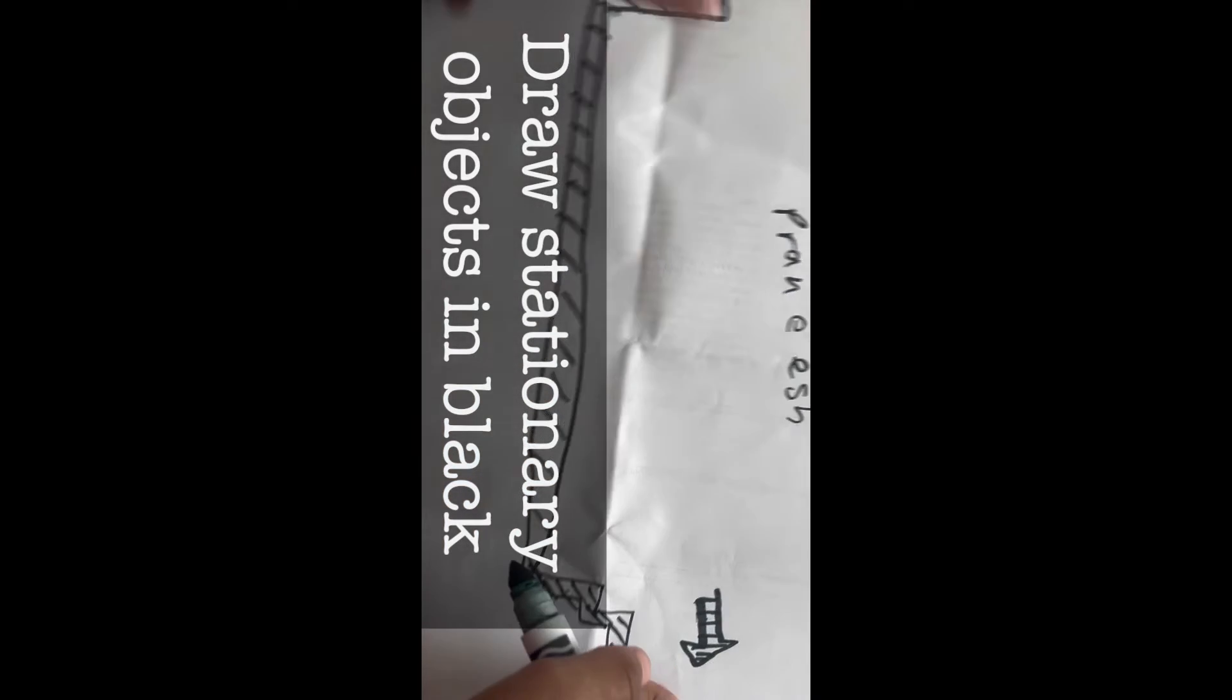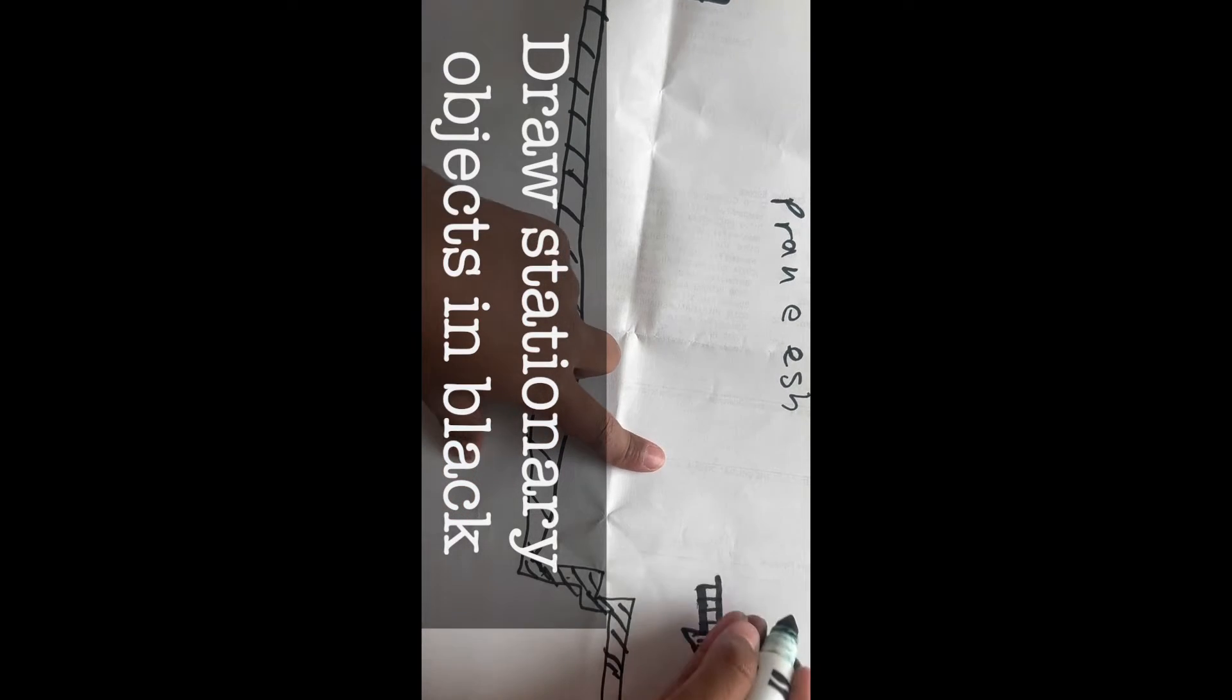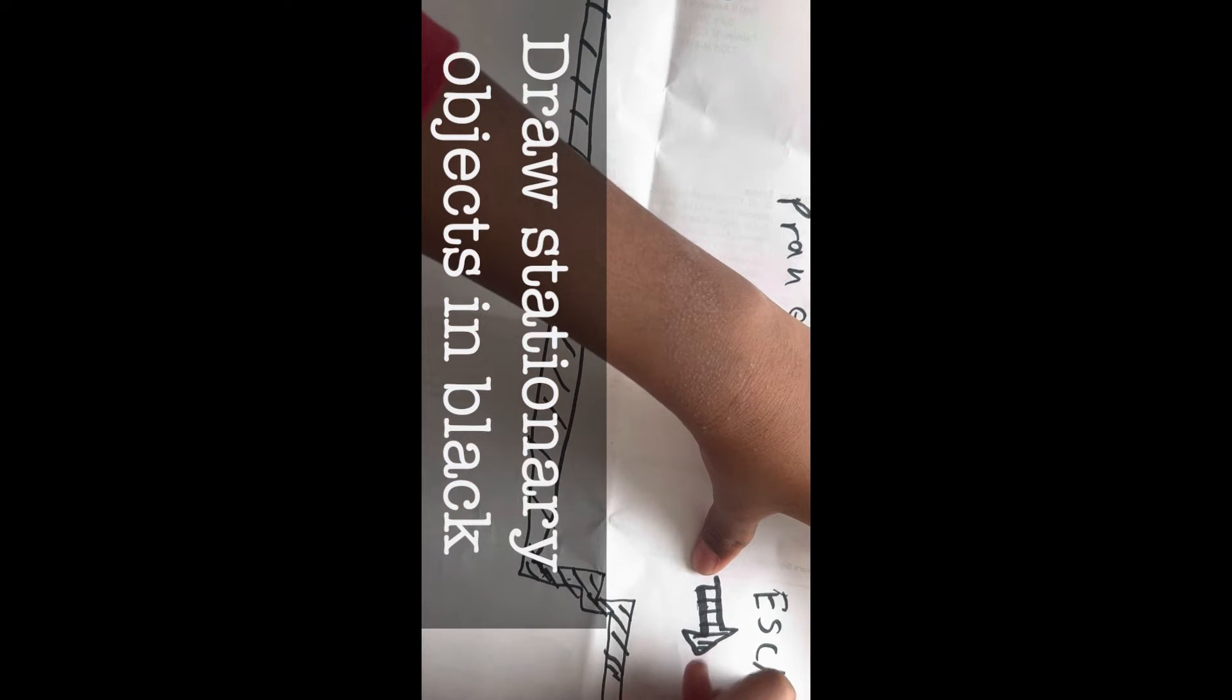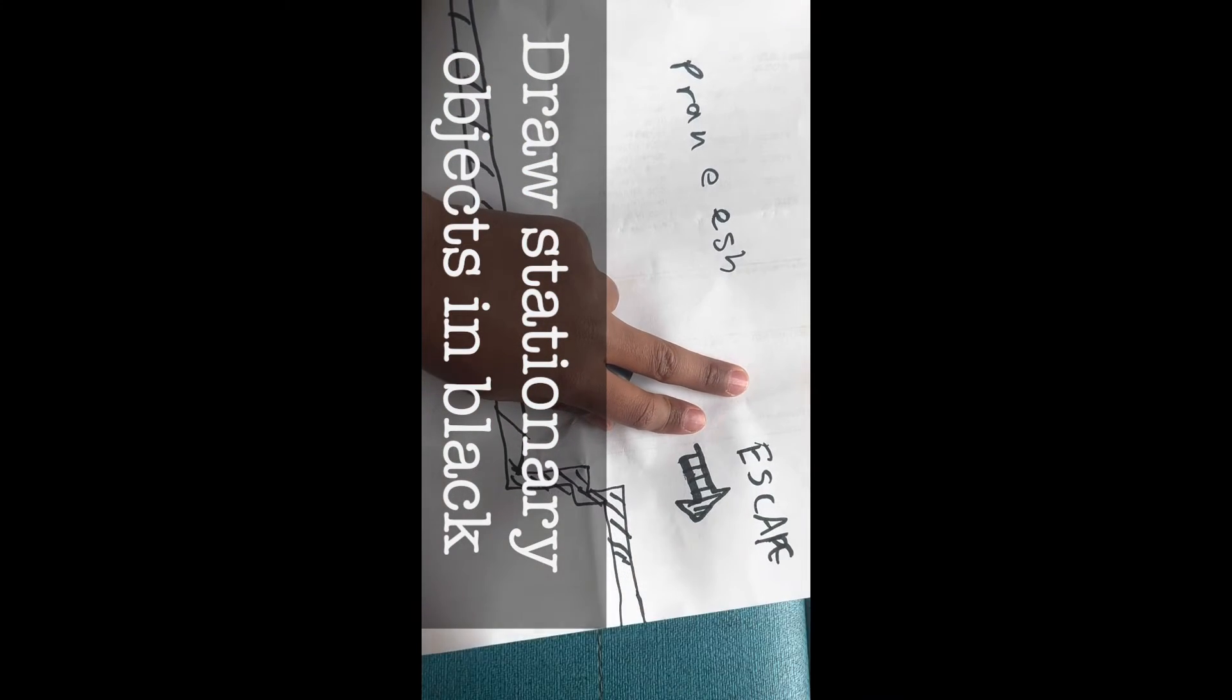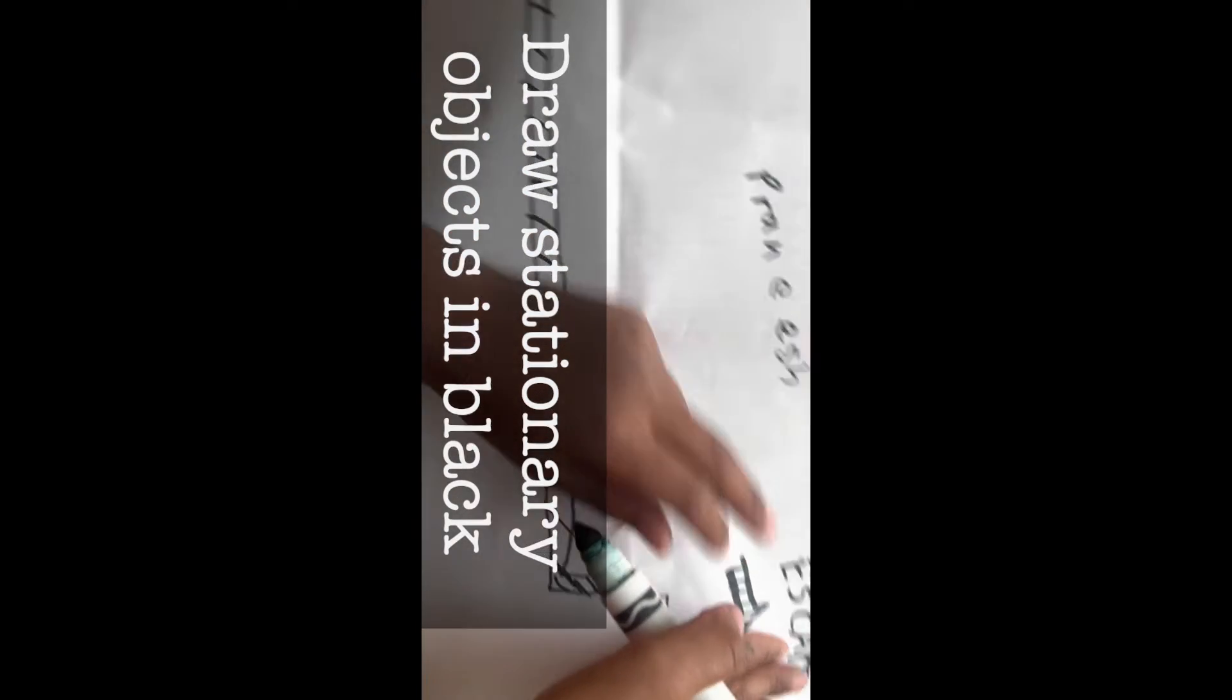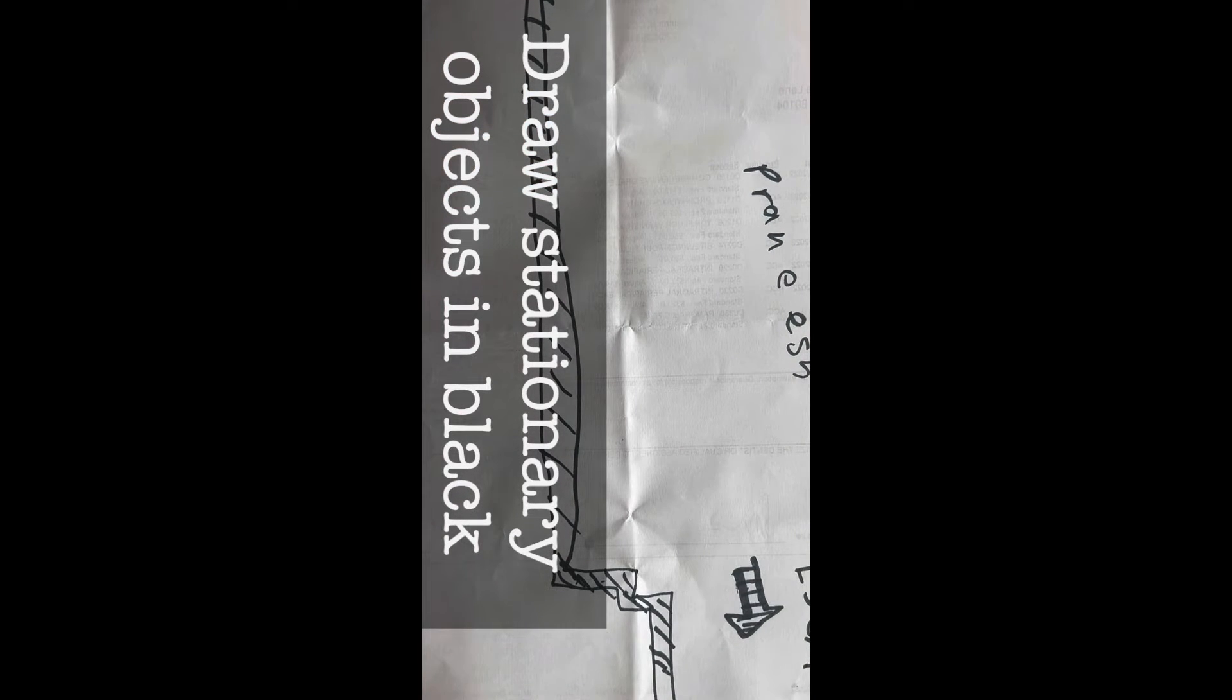And then I'm going to write escape over here. So once you draw stationary objects in black, then you draw movable objects in blue.